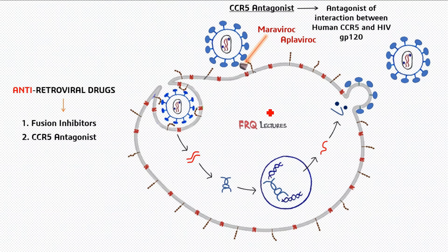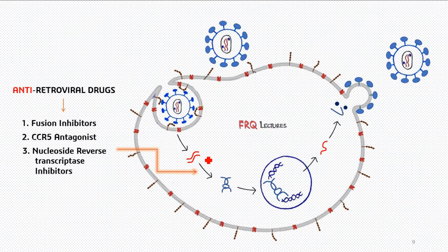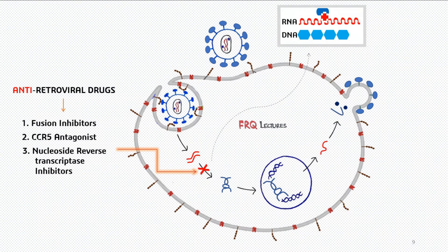Next is the third category: NRTIs, or Nucleoside Reverse Transcriptase Inhibitors. We know there is a step involving reverse transcription — this unique transcription where RNA is transcribed into DNA — and we can halt the procedure at that step. Looking at this picture, the reverse transcriptase is shown in blue, RNA in red, and the DNA being synthesized in light blue. With the help of reverse transcriptase, RNA synthesizes DNA.